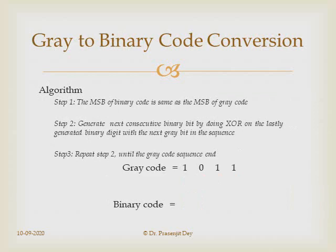To convert from gray code to binary: the MSB of the gray code is directly copied as the MSB of the binary code. Then, for each subsequent bit, we XOR the currently generated binary bit with the next gray code bit to generate the next binary bit. We continue until the sequence ends. For example, gray code 1011 converts to binary 1101.